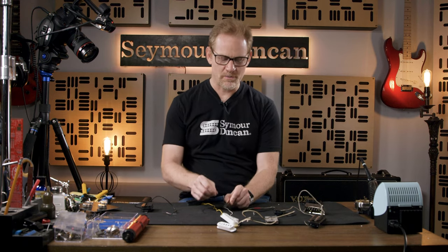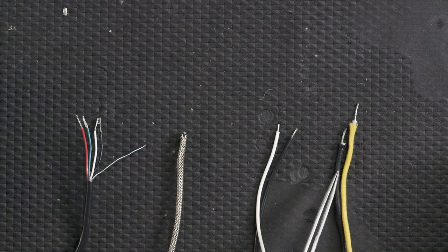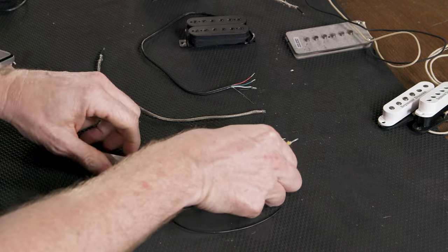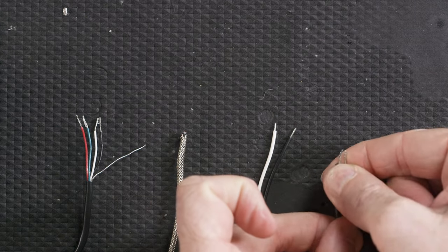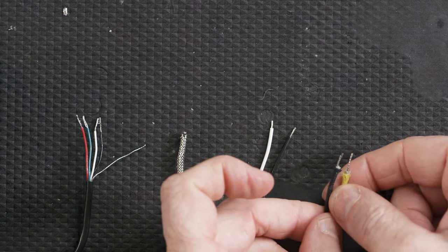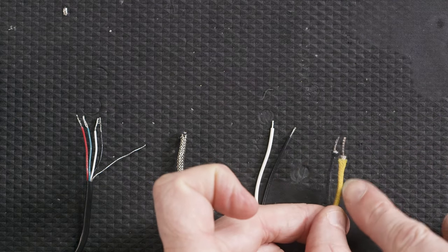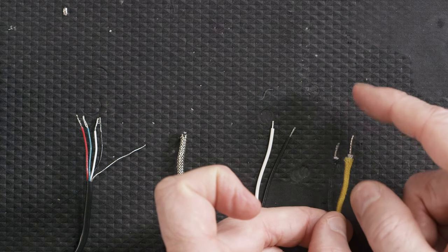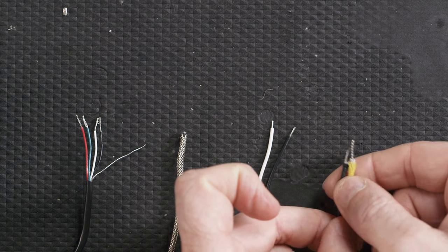One of the things that you'll find quite a bit, especially on our vintage style pickups, is this cloth pushback wire. This cloth pushback wire is really nice to work with because it's pre-tinned. Like the name says, all we have to do is push back the cloth portion, this outer cover, and that'll expose that wire and then we can hook that up to our terminals or lugs on our potentiometer.